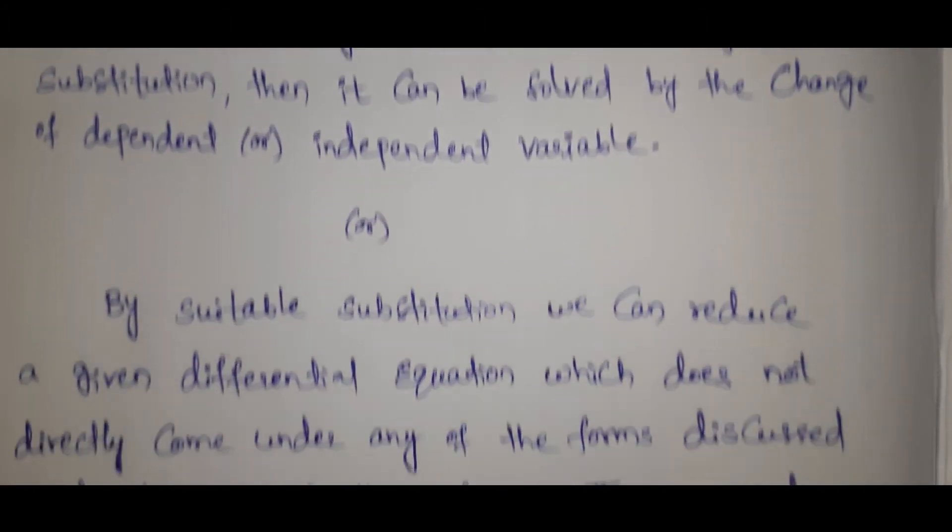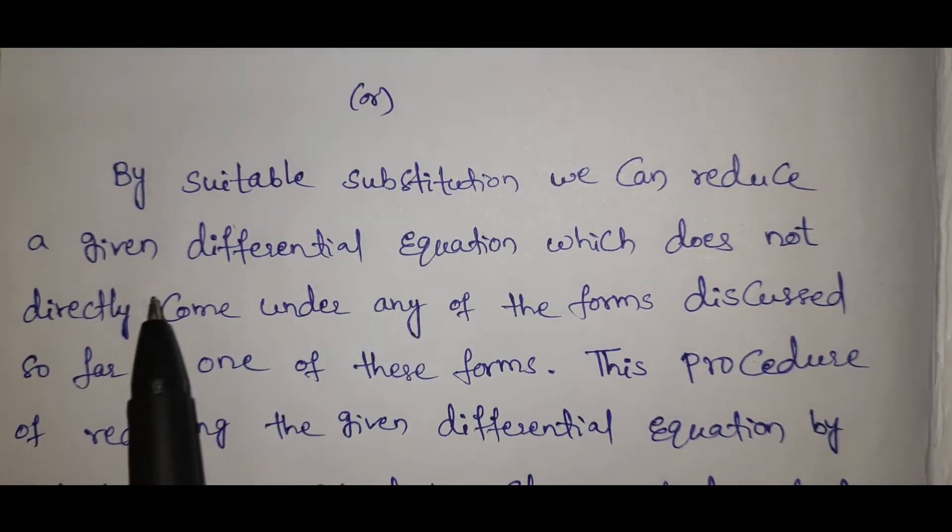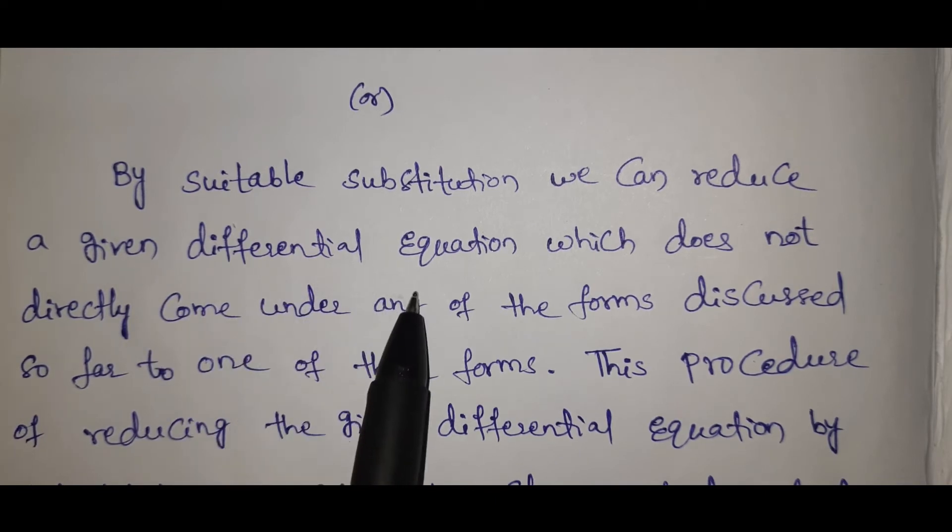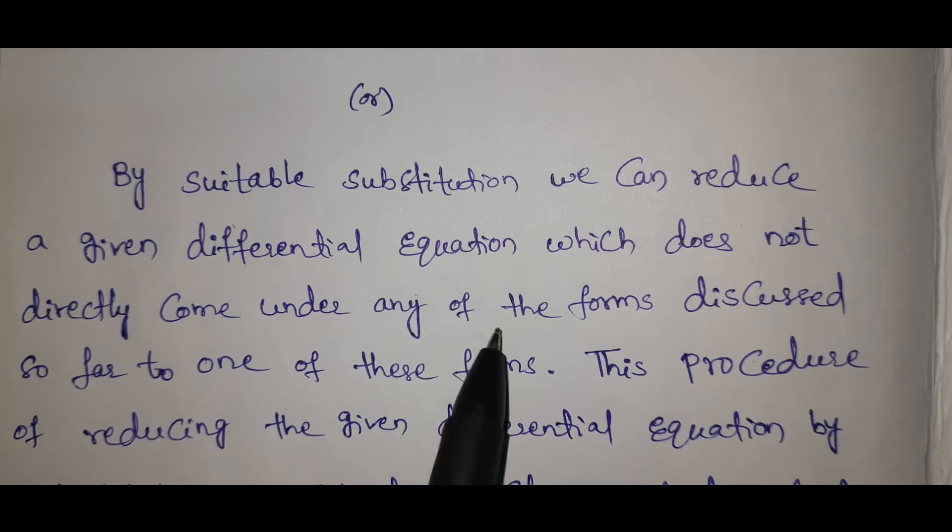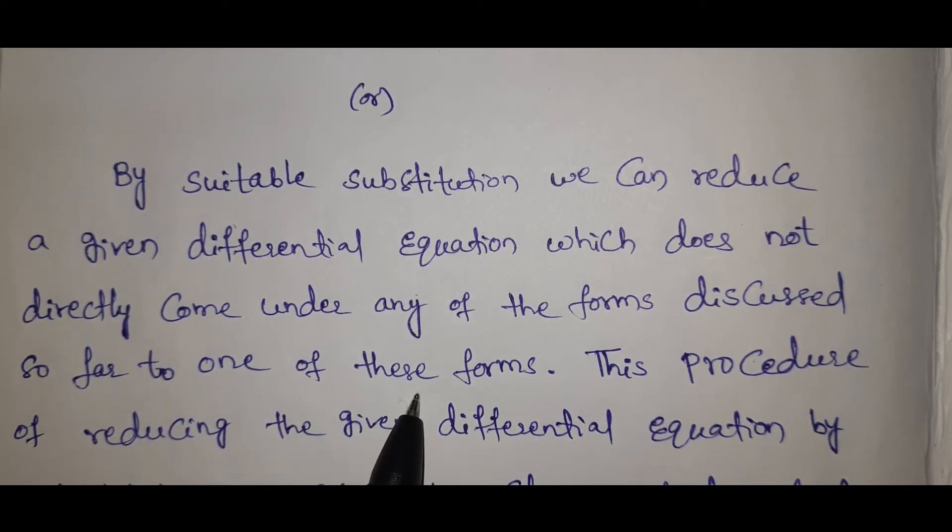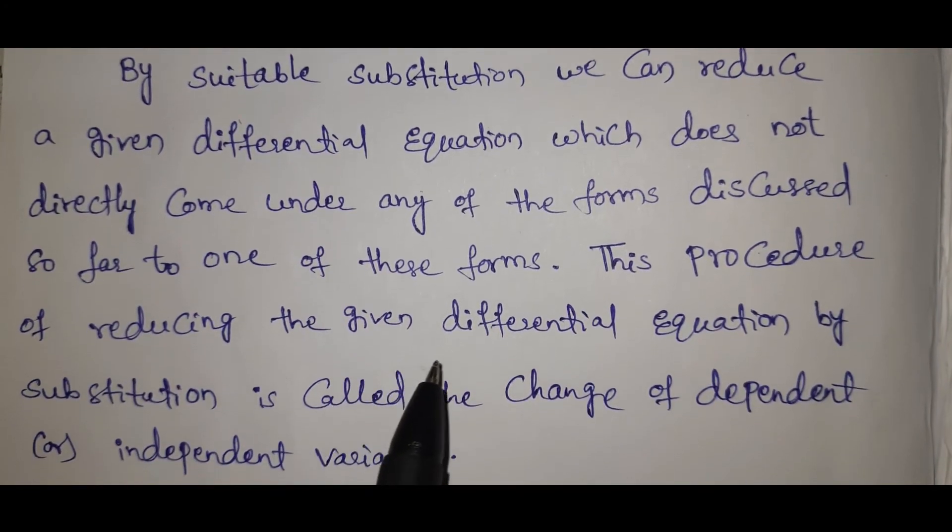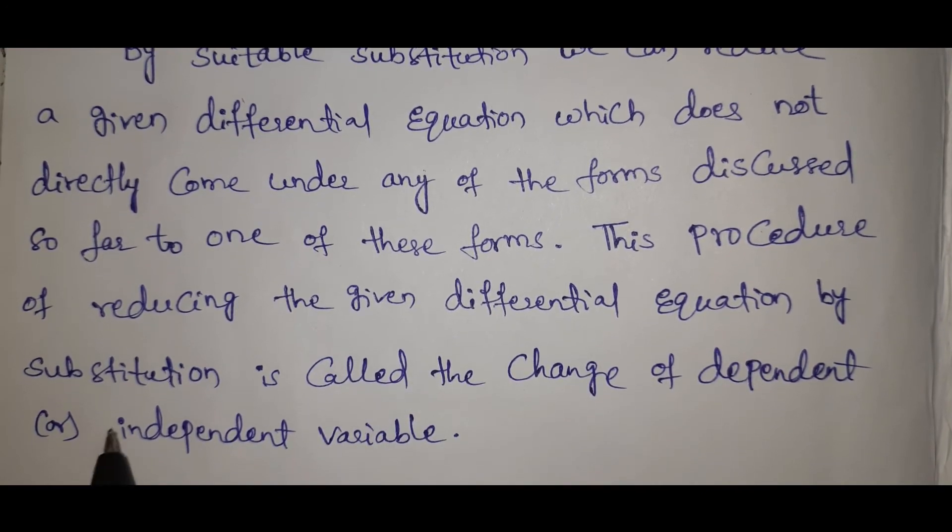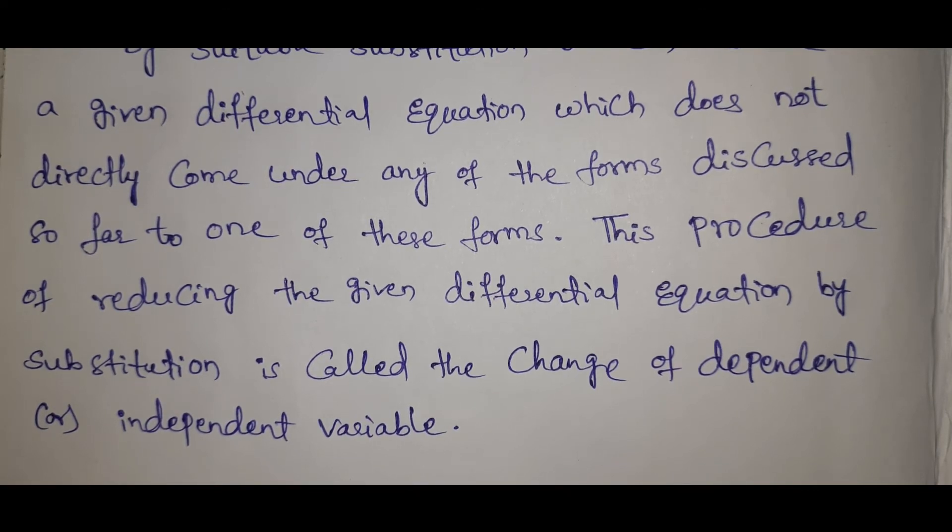Okay, see another definition here. By suitable substitution we can reduce a given differential equation which does not directly come under any of the forms discussed so far to one of these forms. This procedure of reducing the given differential equation by substitution is called the change of dependent or independent variable.